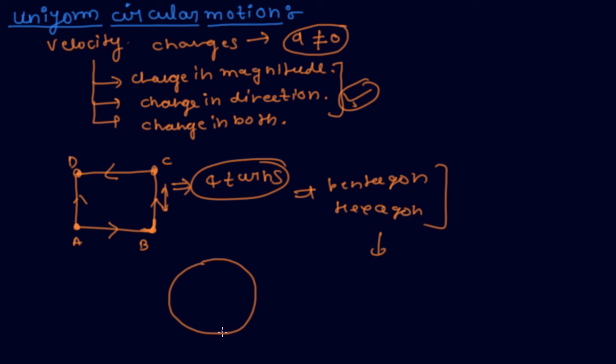So uniform circular motion means the motion of an object along a circular path in which the velocity changes.